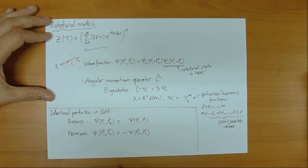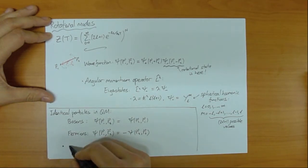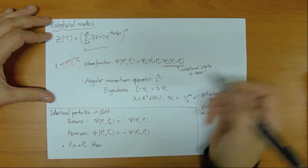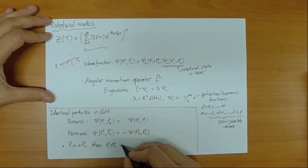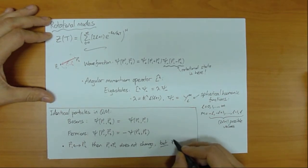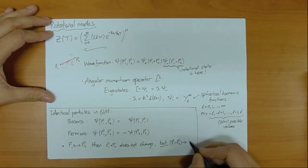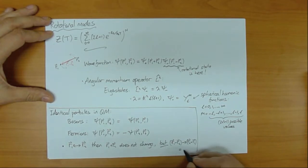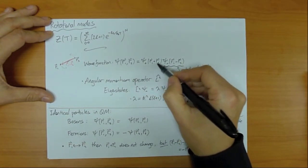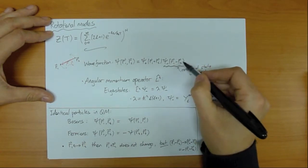What influence does that have on the wave function here? If I interchange R1 and R2, then R1+R2 doesn't change, but R1−R2 is changed to R2−R1, which equals minus (R1−R2). So this interchange of particles leaves the argument of psi_plus the same, but the argument R1−R2 of psi_minus is multiplied by minus 1.